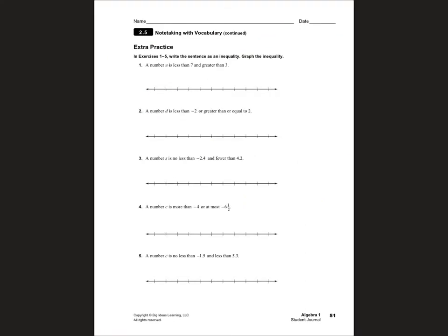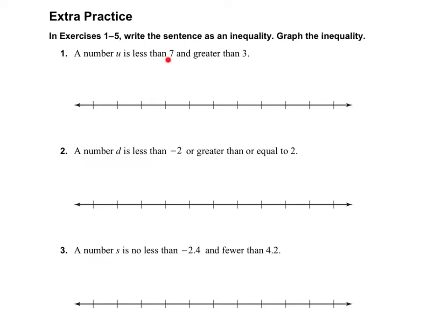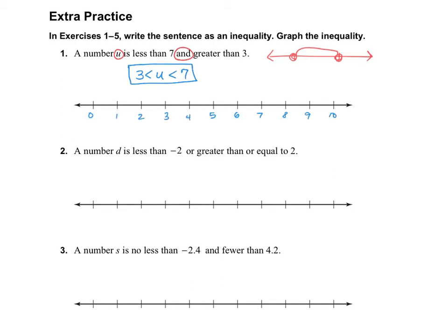Let's look at page 51 in your journals, number 1. A number u is less than 7 and greater than 3. We have the word AND, so this will look like the in-between type on a number line. The variable u goes in the middle, and then we think about the two numbers: u is greater than 3 and less than 7. That's what we write for our compound inequality. We graph it with open circles between 3 and 7 and everything in between.